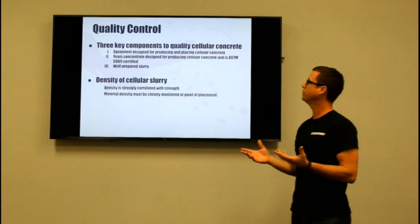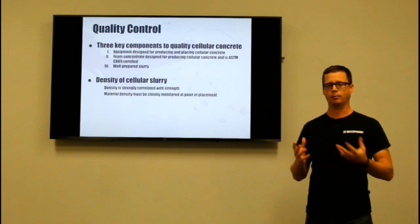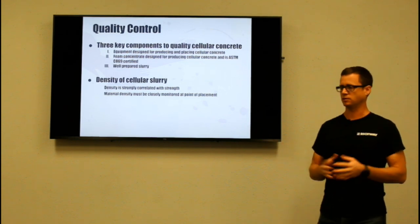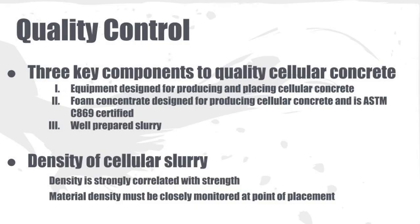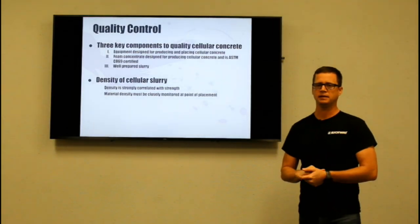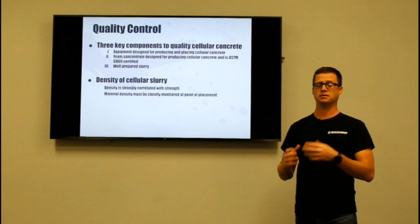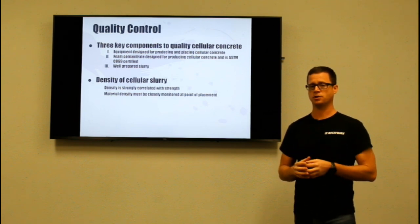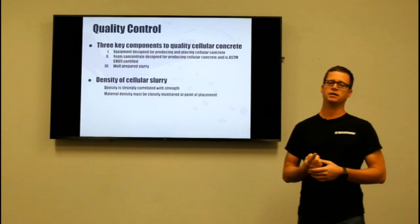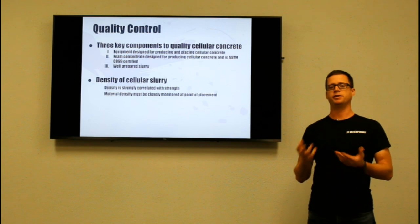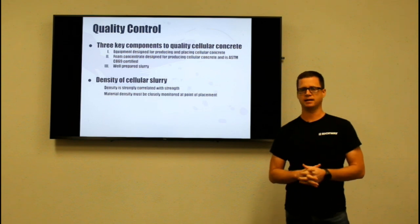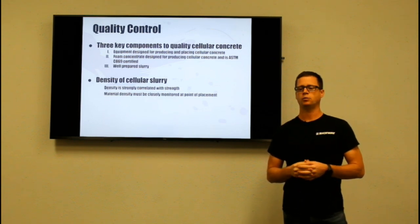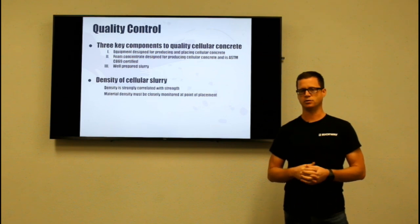Quality control — with cellular concrete, QC is an important component. Three key components to quality cellular concrete: first, equipment designed for producing and placing cellular concrete. What we're talking about here is foam generation equipment — having foam generation equipment designed to produce a small, consistent bubble structure is extremely important. Another component to consider is the pump you may use; the condition and style of the pump will affect whether or not you have any density change issues as you pump the material.